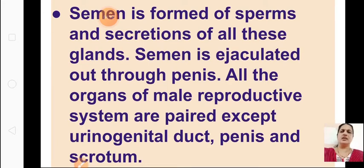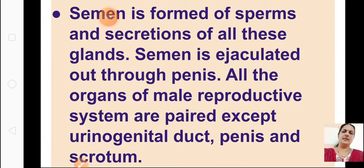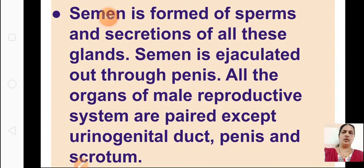The semen is ejaculated out through the penis. All the organs of the male reproductive system are paired except the urinogenital tract, penis, and scrotum. Except these three, all others are paired. I have already explained this in detail in a previous video; now I have explained it in short.